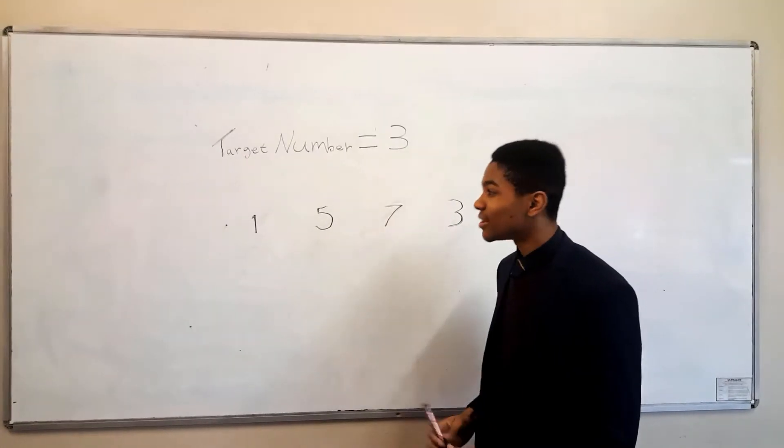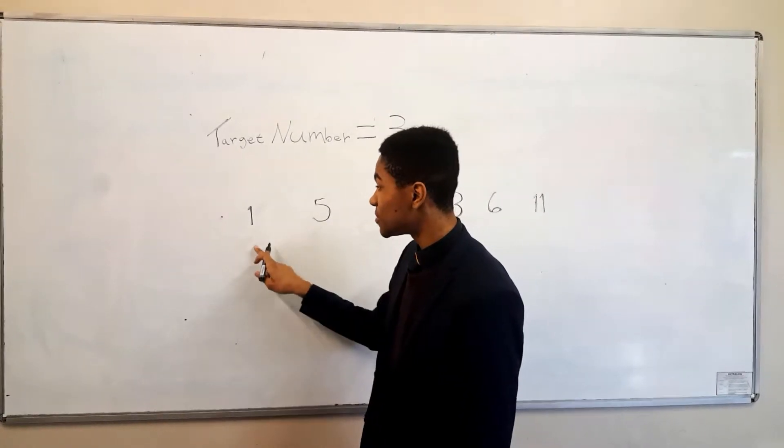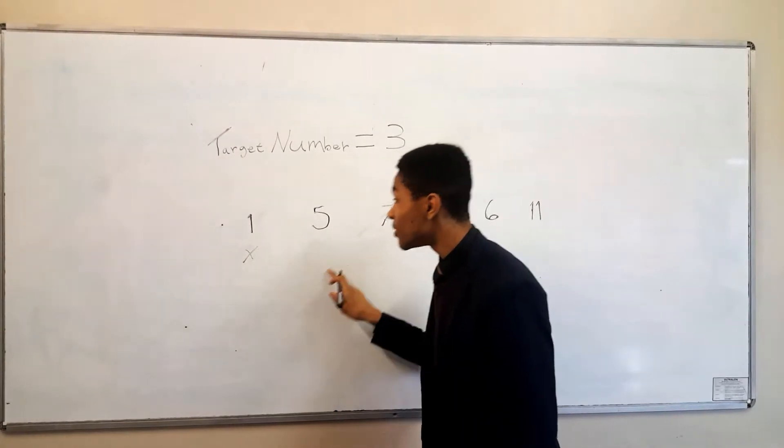I've chosen 3 as our target number. So, we first start by comparing 3 to the first index, which is 1. In this case, 1 is not equal to 3 and so we move to the next index.